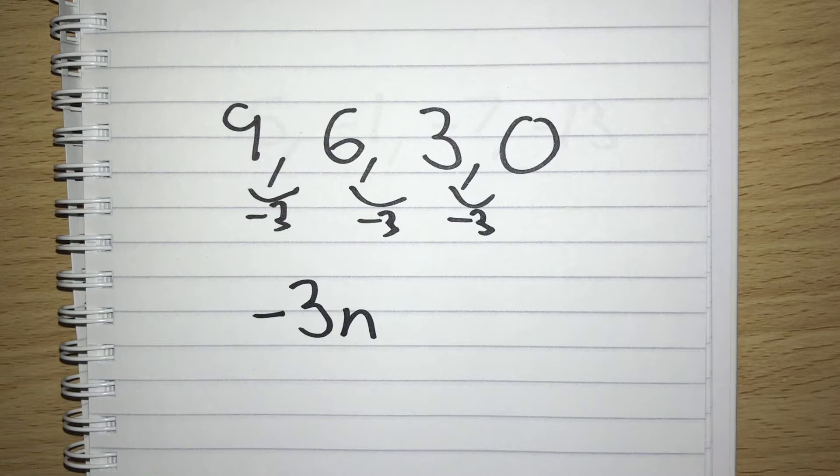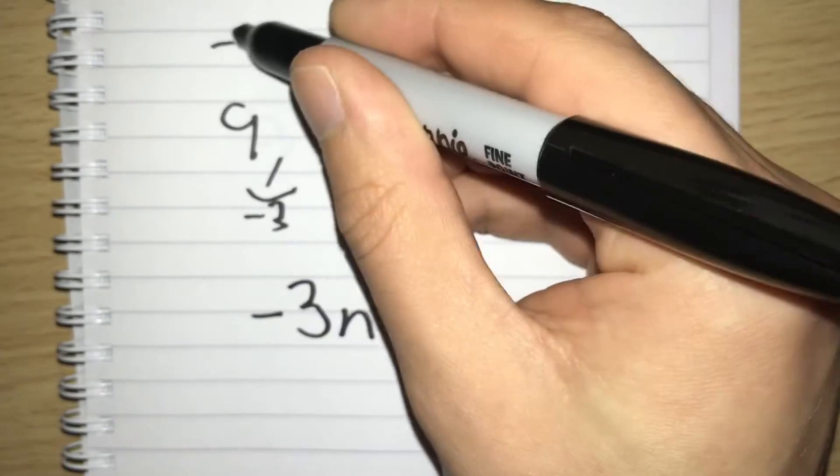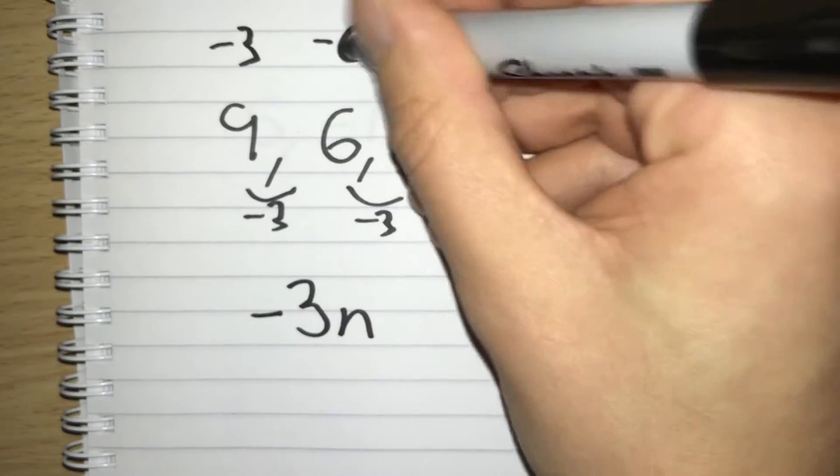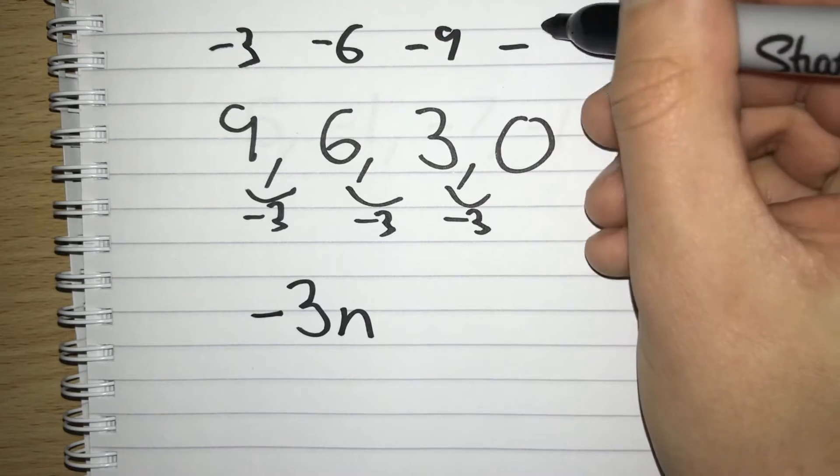So let's put out our minus 3 times table. Think back to how we did it with our increasing sequences. We did our 3 times table if we had a 3n. Now we've got a negative 3 so we're going to do a negative 3 times table. So that goes negative 3, negative 6, negative 9 and negative 12.